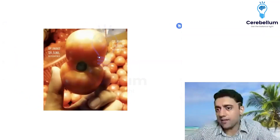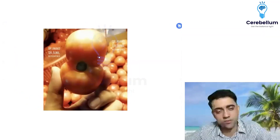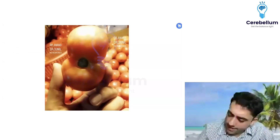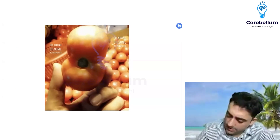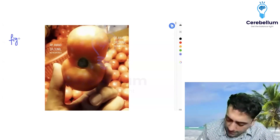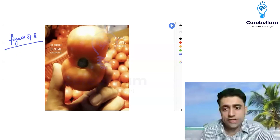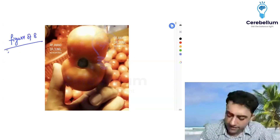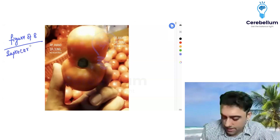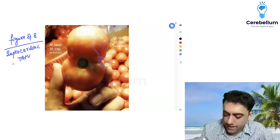Let's start with an image-based question. What is this image? This is nothing but a figure-of-eight appearance. Where do you see figure-of-eight appearance? The topper should say supracardiac TAPVC — supracardiac TAPVC presents with figure-of-eight appearance.